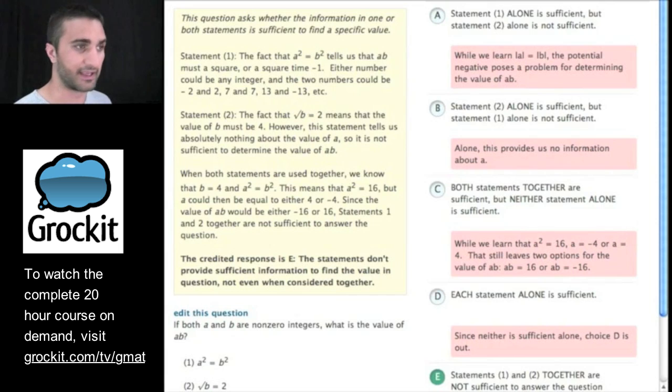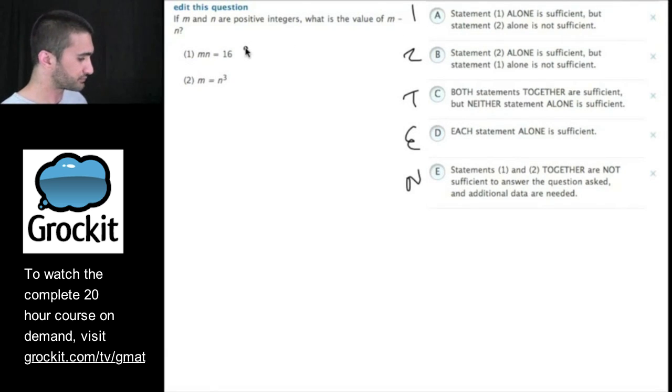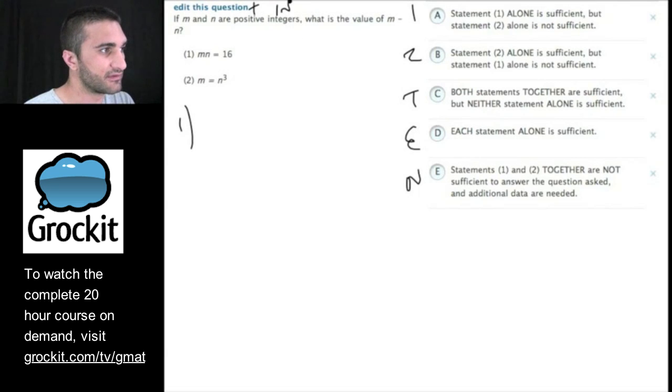Let's actually take a look at an inequality question together. We have a data sufficiency on our hands. Let's go ahead and set it up and see if we're dealing with a yes-no. So if m and n are positive integers, what is the value of m minus n? We are not dealing with a yes-no question. So we know that m and n are positive integers. They are positive integers. What is the value of m minus n? That's what they want to know.